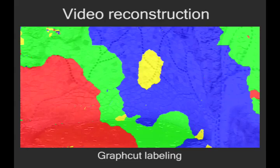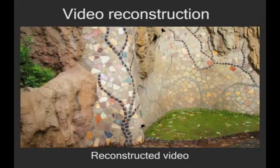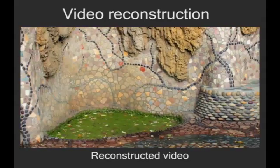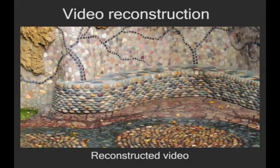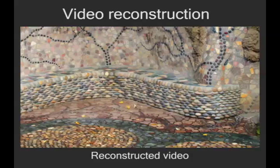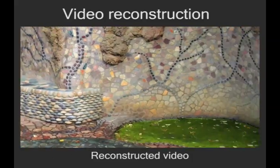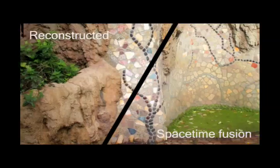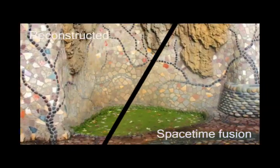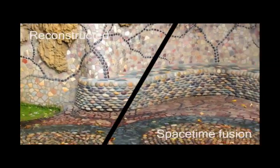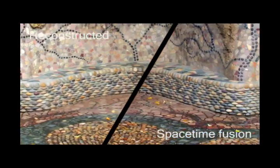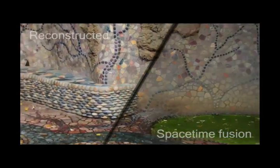Here we show the graph cut labeling with each photograph represented by a different color. The reconstructed video may contain artifacts. For example, in this reconstruction, we can see holes, seams, and temporal incoherence. Our space-time fusion technique reduces these artifacts by incorporating the temporal gradients of the input video.